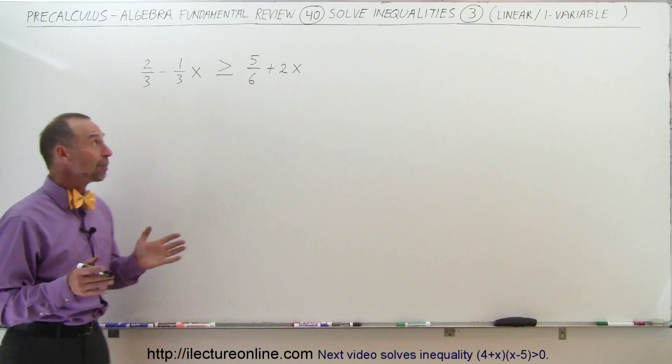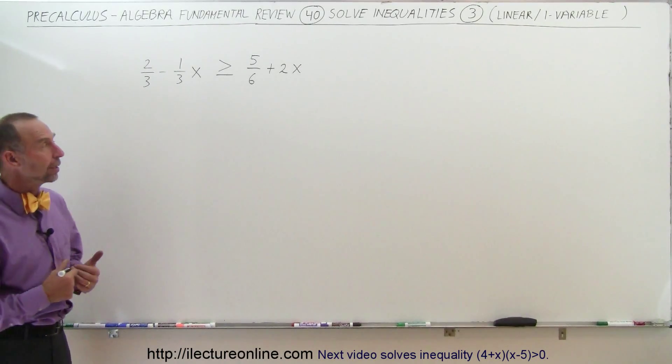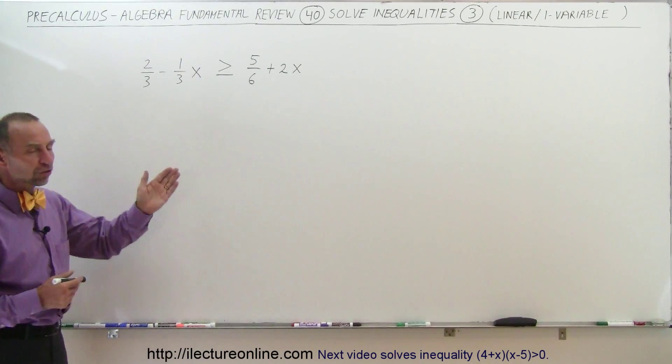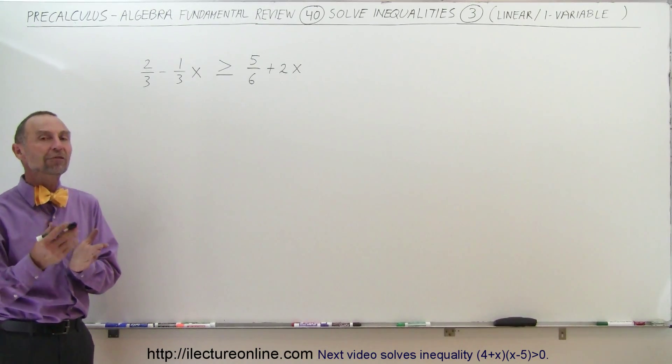Welcome to Electron Line and here's another example of how to solve a linear inequality. In this case we have fractions, so the first thing we always want to do is get rid of the fractions.